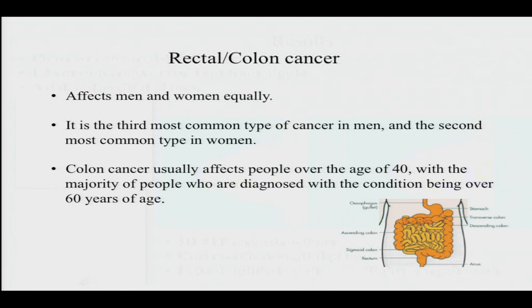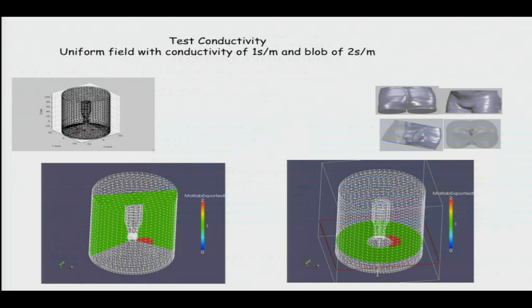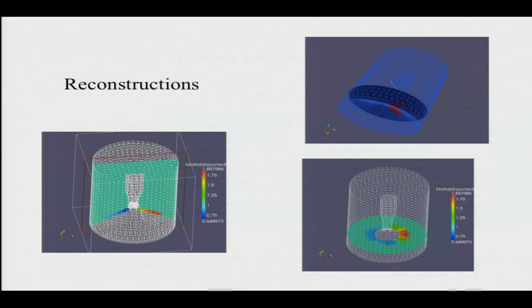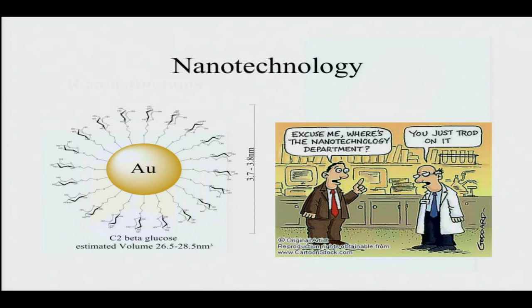The project we're working on at the moment is colorectal cancer, which is the third most common type of cancer in men and second most common in women, affecting people over the age of 40. The problem is we don't have a non-invasive regular screening method — patients normally turn up with blood in the stool when the condition is already advanced, requiring radical surgery rather than regular screening. We've been building models of the inclusion of the tumor mass, with reconstructions, and the idea is to build an array device that will go up the rectal area and scan to give an image map across the whole region.